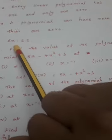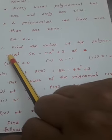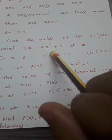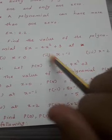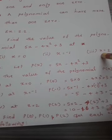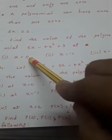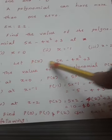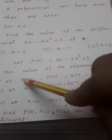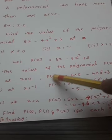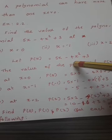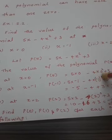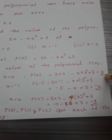Now we can discuss Exercise 2.2, first section. The question is: find the value of the polynomial 5x minus 4x square plus 3 at the following values of x. First sub-question: at x equals 0. We substitute the value of x as 0, giving 5 into 0 minus 4 into 0 square plus 3. Since 5 into 0 is 0 and 4 into 0 square is 0, the answer is 3.